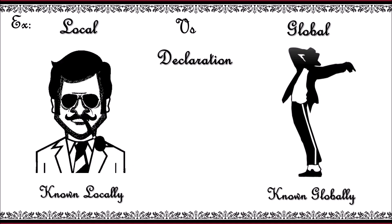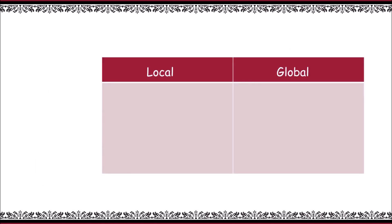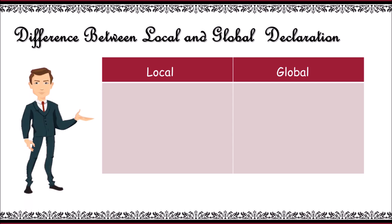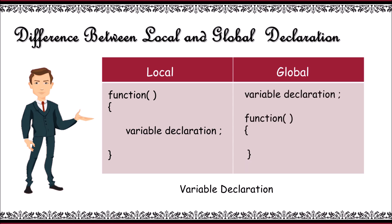Let me explain the same concept in terms of our programming language. The basic difference between local vs global declaration: local variables are declared inside a function and can be used only inside that particular function. Whereas global variables are declared outside the function and can be accessed in any function in the program.